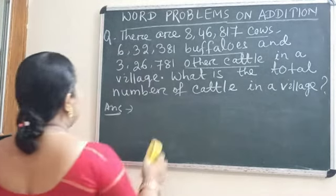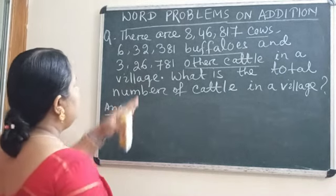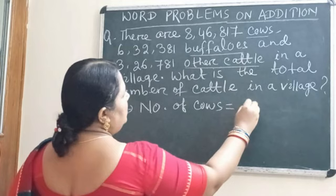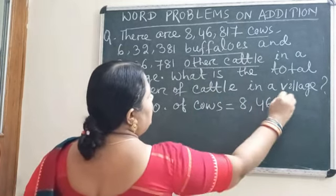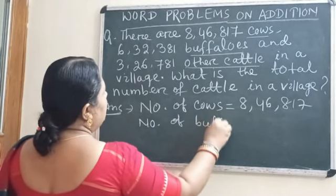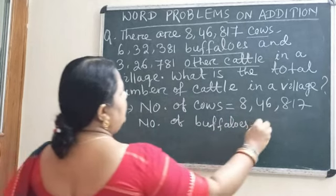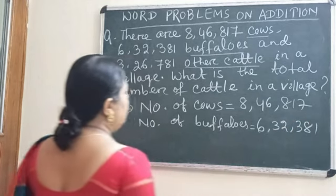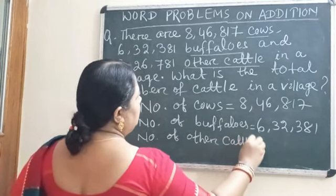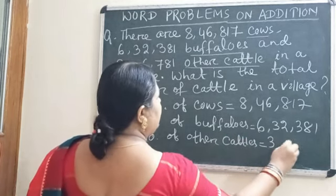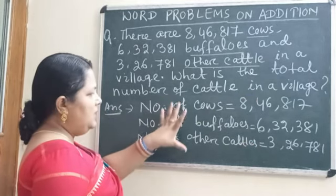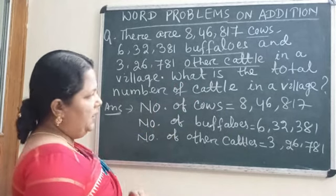So let's write the statement for this example. You will write: number of cows equals 8,46,817. Then, number of buffaloes equals 6,32,381. Then, number of other cattle equals 3,26,781. These things are already given in the question, so this is your statement — we have written what is given in the form of a statement.